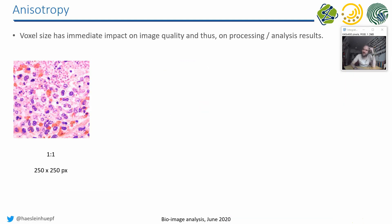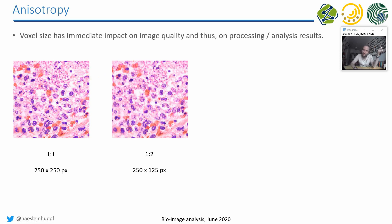To elaborate on what anisotropy actually means for image processing — for example, for cell detection and cell segmentation — here is a histological slice. We see cell nuclei in violet. When you look at such an image, the pixel dimensions in X and Y are in a ratio of 1 to 1, so we clearly and nicely see these nuclei. For demonstration purposes, I will now change this ratio and reduce the number of pixels in the Y direction.